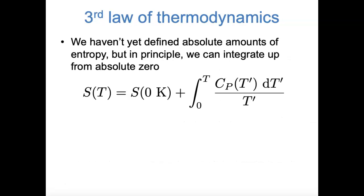So far we've still been talking about changes in entropy, but I promised we would talk about absolute entropies. We can find a change in entropy from one temperature to another by integrating the heat capacity over the temperature. That means that if we knew the absolute entropy at absolute zero — at zero Kelvin — we could find the absolute entropy at any temperature, just by integrating the heat capacity over temperature up from absolute zero to whatever temperature we're interested in.